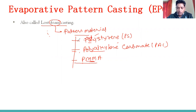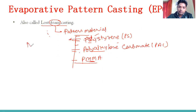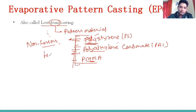What material we have to choose depends on the casting — meaning what material we are using for the casting purpose. If the casting material is non-ferrous, then we use polystyrene for the pattern. If the casting material is ferrous, then we use PAC or PMMA.